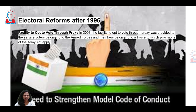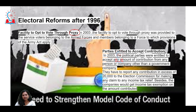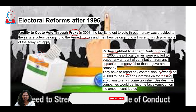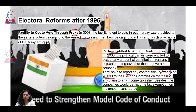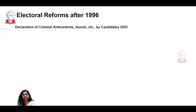There is also the option to vote through a proxy. Particularly, people from the armed forces can have someone vote on their behalf. Besides muscle power, money power is also a major problem in elections. Parties are entitled to accept contributions from any person or company other than the government, but they must report any contribution in excess of ₹20,000. This keeps a check on the source of money and the amount circulating during elections.